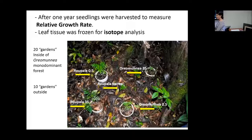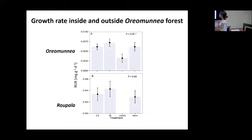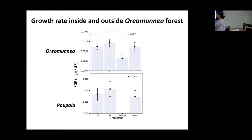We measured the relative growth rate for a whole year, and at the end we harvested everything — measuring all biomass, carbon content, nitrogen content, nitrogen isotopes, and carbon isotopes in the seedlings, and the same variables in the soil. What we found was that the seedlings that grew the least were the controls, and the seedlings that were isolated grew very well. What we were seeing was an effect of lower competition in the exclosures. The plants did not have any negative effect when isolated from the networks. The same pattern was seen in Ropala. We concluded that they were probably not depending on mycorrhizal networks.